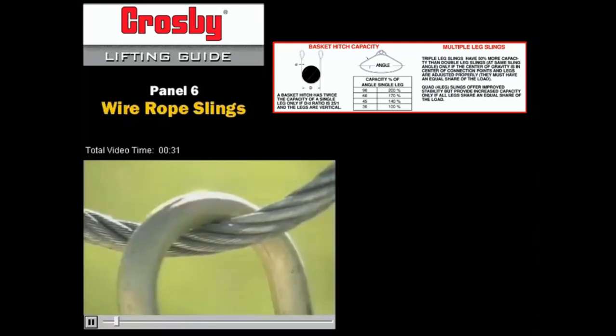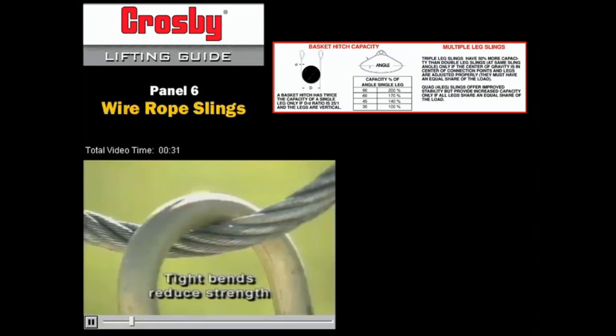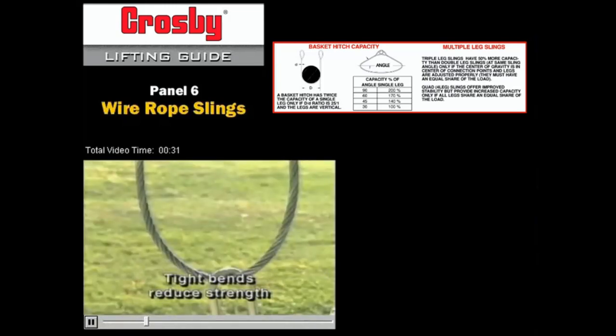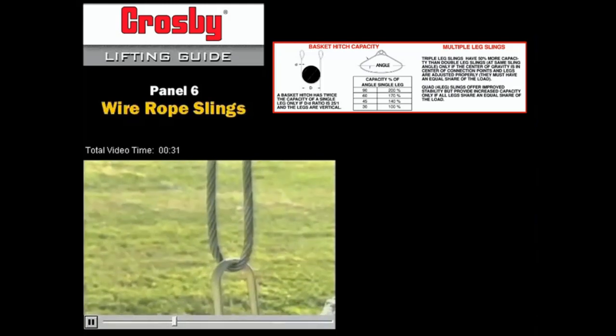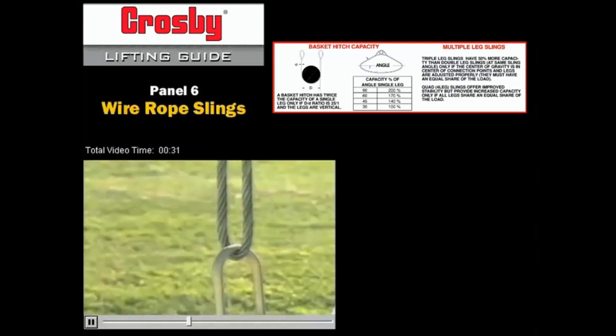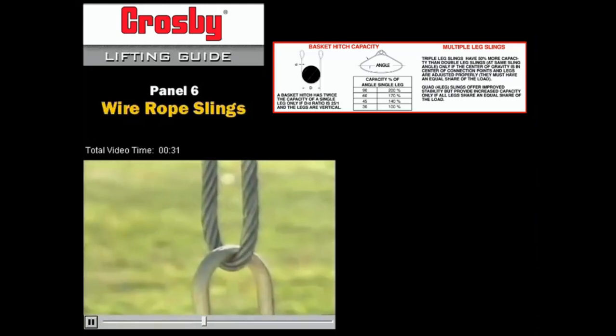Do you realize that tightly bending a wire rope sling can reduce its strength up to 50%? Think about that for a minute. The manufacturer's specs may show a breaking capacity of 10,000 pounds. And with one mistake,